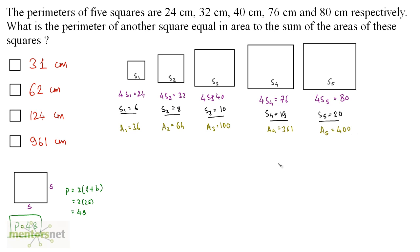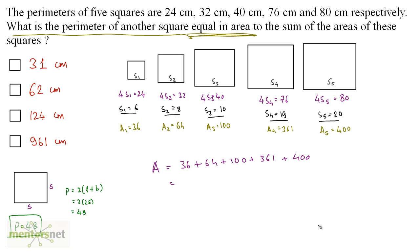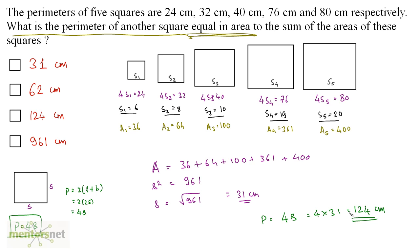Now we know the areas. We have been asked what is the perimeter of another square equal to the sum of the areas of these squares. So the total area is 36 + 64 + 100 + 361 + 400 = 961. Since area equals side squared, the side is the square root of 961, which is 31. The perimeter is 4 times the side, that's 4 × 31 = 124 centimeters. So option C is the correct answer.